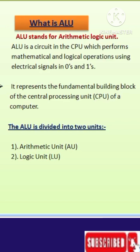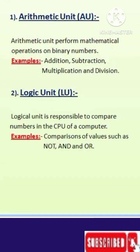The ALU is divided into two units: first is Arithmetic Unit, second is Logic Unit. Let's see what is Arithmetic Unit. Arithmetic Unit performs mathematical operations on binary numbers. Examples are addition, subtraction, multiplication, and division.